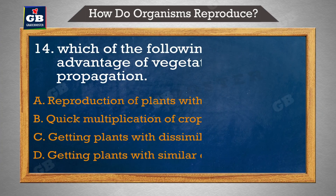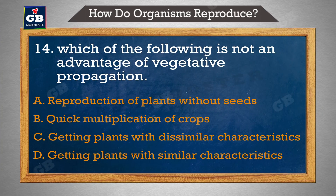Which of the following is not an advantage of vegetative propagation? — in mein se kaun sa vegetative propagation ka laabh nahin hai. A. Reproducing the plants without seeds, B. Quick multiplication of crops, C. Getting a crop with dissimilar characteristics, D. Getting a crop with similar characteristics.